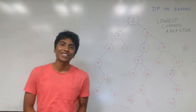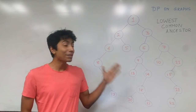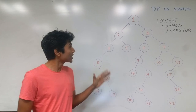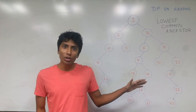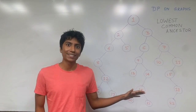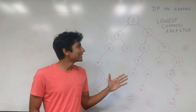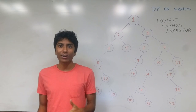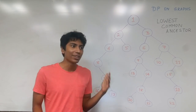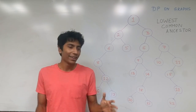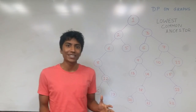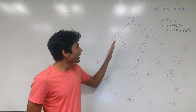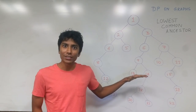Hi guys, this is GKCS. We are talking about DP on graphs this time and there's a very common problem called the lowest common ancestor. We'll be talking on that. This is extensively used in heavy-line decomposition, Euler tour, and everything else. So this is pretty interesting. Let's have a look. We have this tree with us.